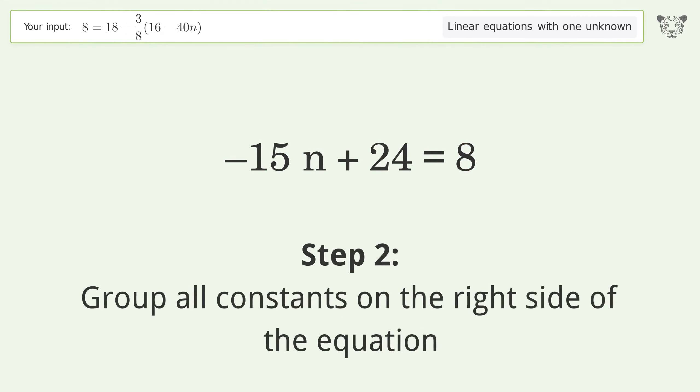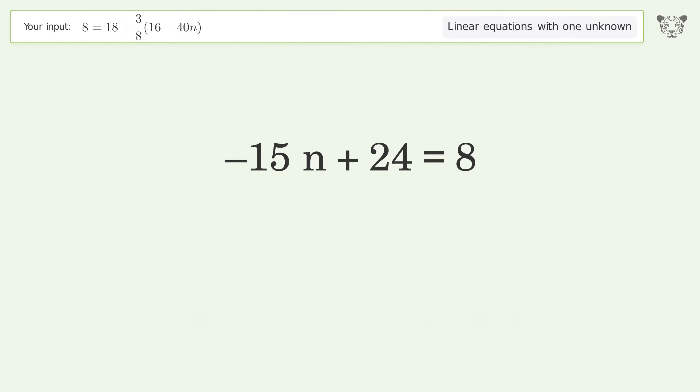Group all constants on the right side of the equation. Subtract 24 from both sides. Simplify the arithmetic.